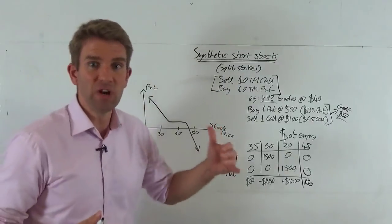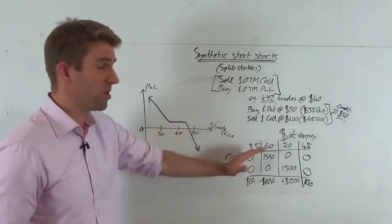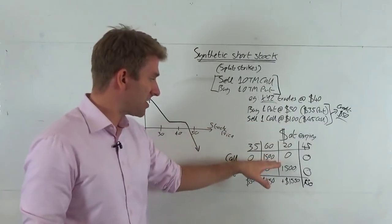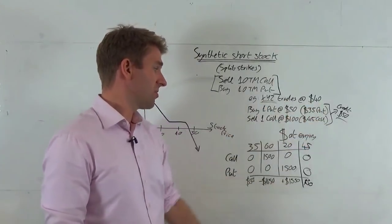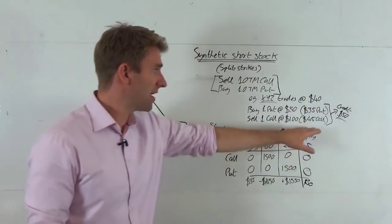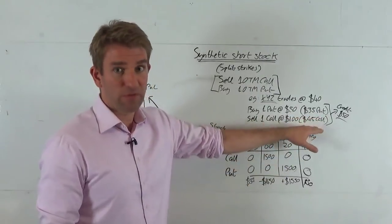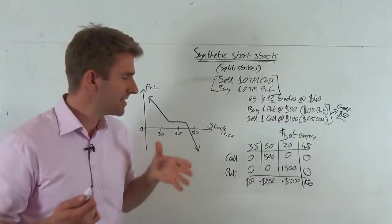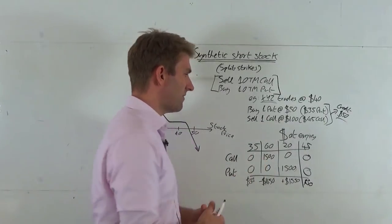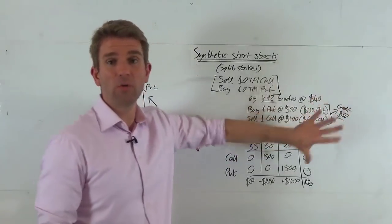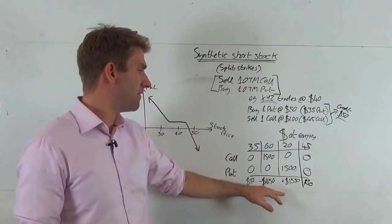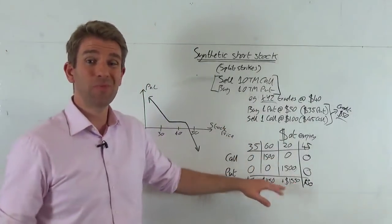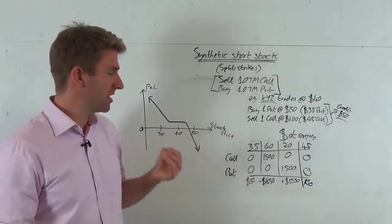What if we're really wrong and the stock rockets up to $60? The $45 call we sold is now worth $15 ($60 minus $45), times 100 — we owe $1,500. We received a $50 credit, so we're down $1,450. That's still better than being naked short, where we'd be down $2,000 ($20 move times 100 shares). So we've dampened the loss a little bit.